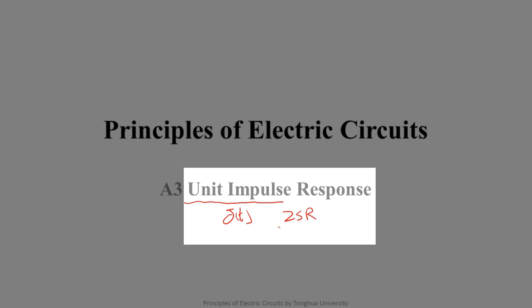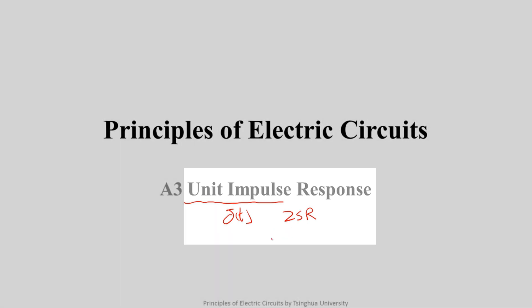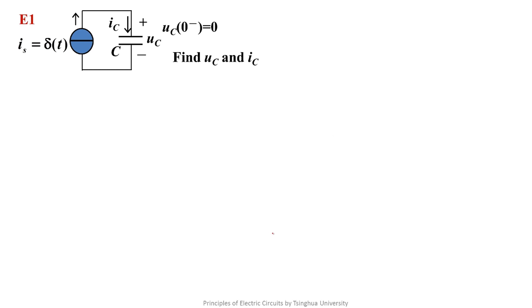Why must it be zero-state response? We will discuss this in lecture A4. In this lecture, we need to accept this definition firstly. We will use three exercises to discuss how to solve the zero-state response with the excitation of the unit impulse function.